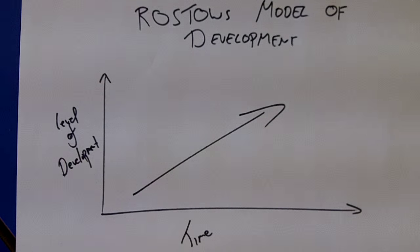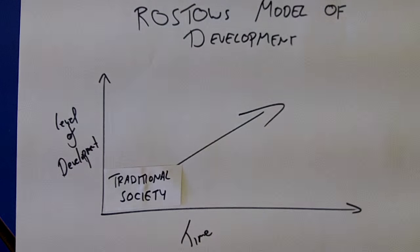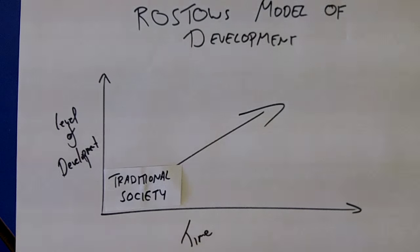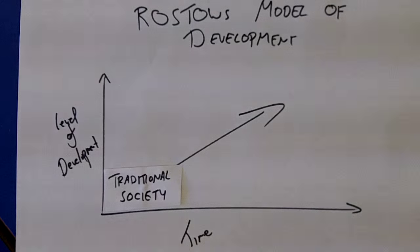Rostow's model was developed in 1960 by an American economist, and it states that all countries progress through five levels of development. All countries start as traditional societies — these are agrarian, small villages, not necessarily subsistence agriculture, but without massive amounts of trade. There will be government, but it will be fairly weak. People will live year to year — some years good crops, some years bad crops — so the population stays fairly low. Most societies on earth were traditional societies up until about the 1700s, when countries like the UK started to move away from this. The only real societies that would still be traditional today are things like Amazonian tribes.